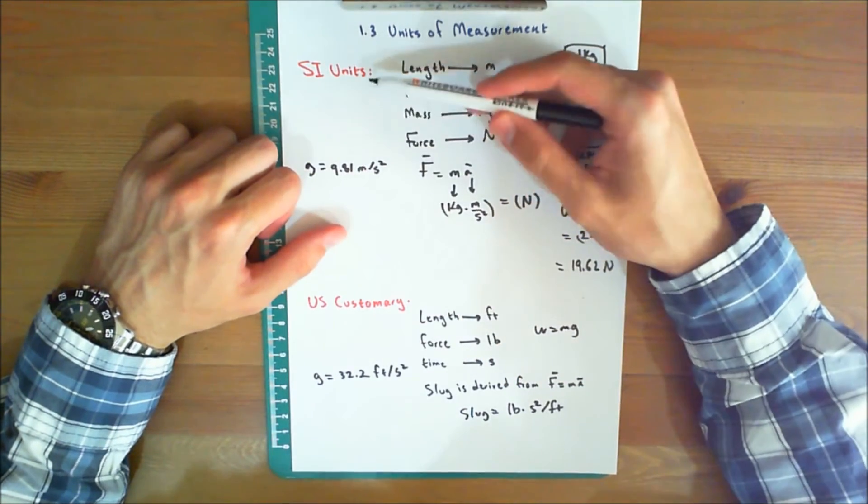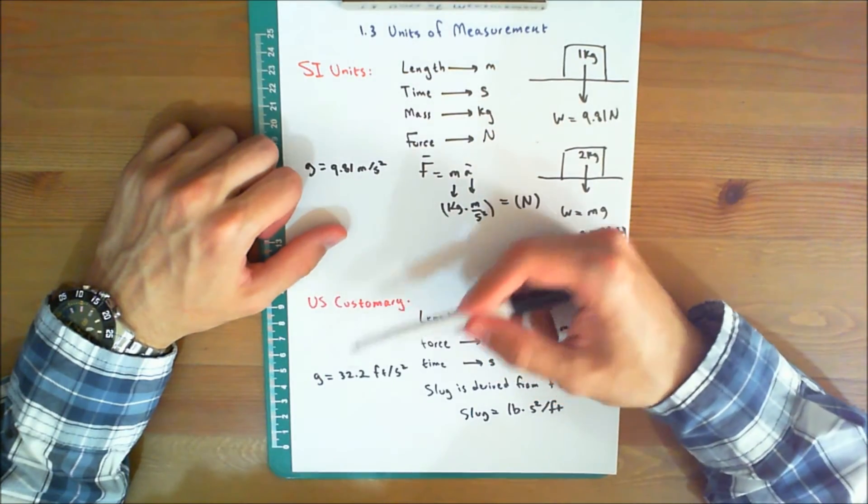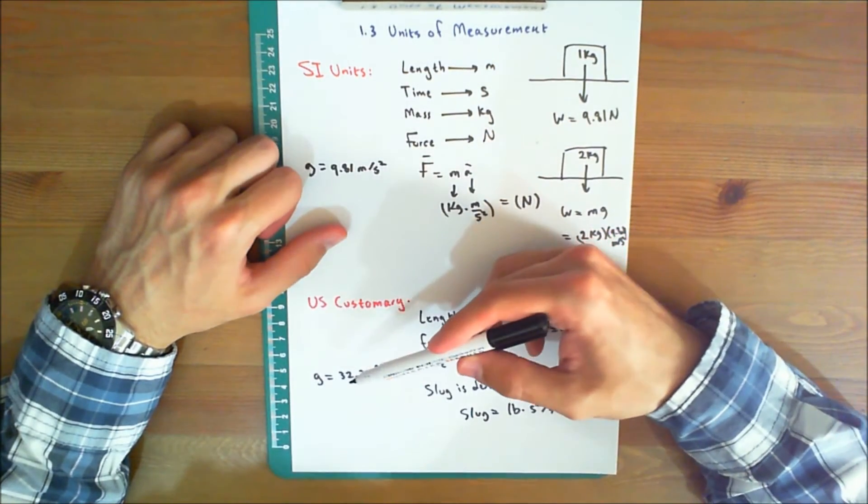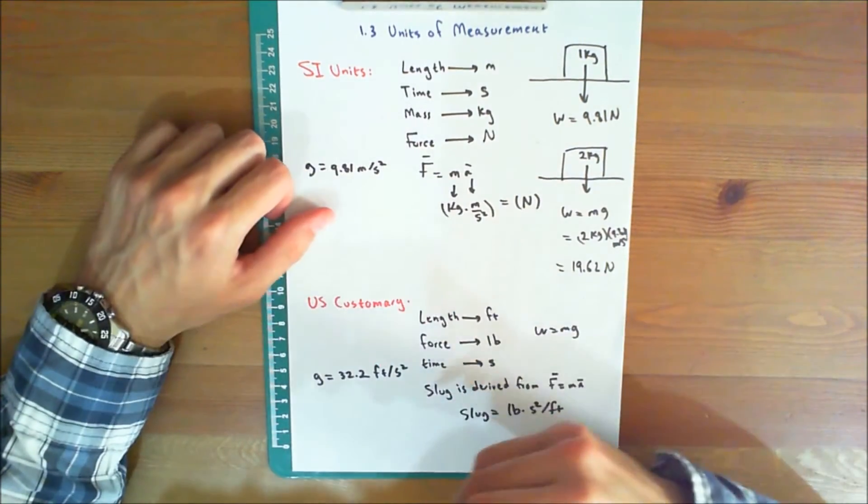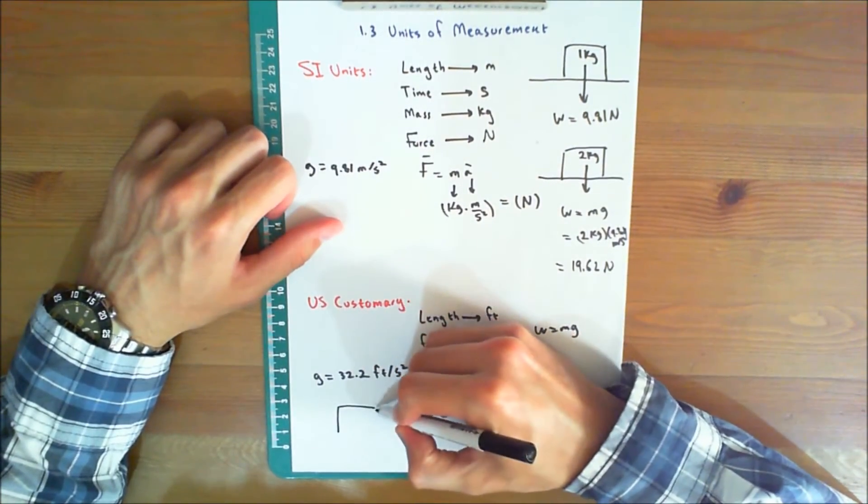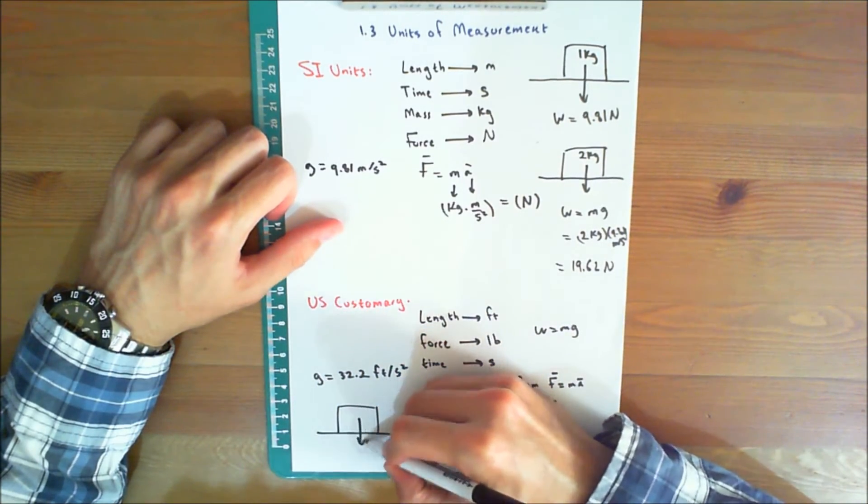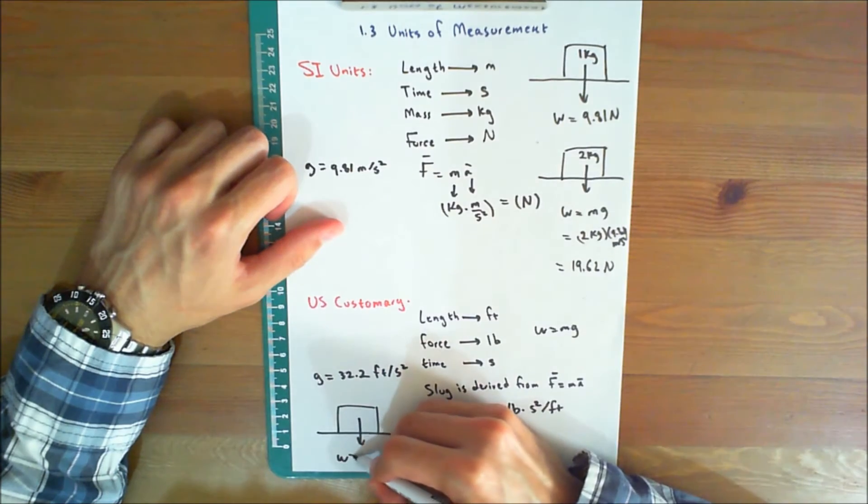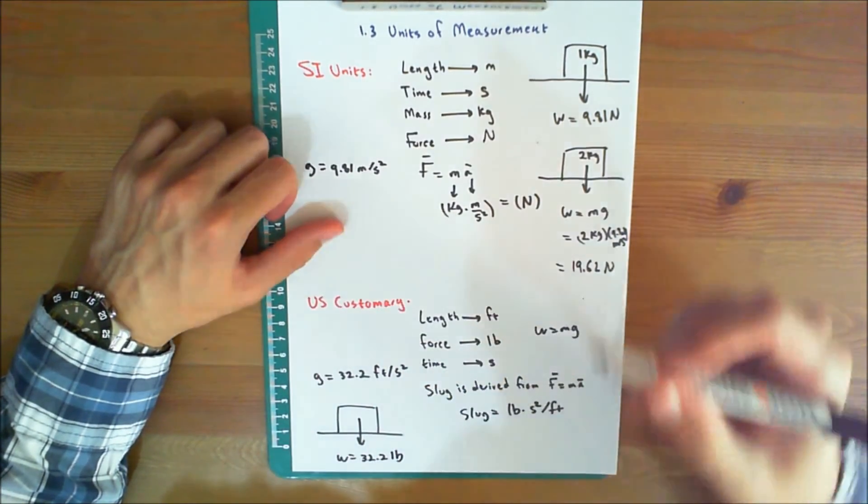Note that g for SI units is 9.81 meter per second squared, whereas g in U.S. Customary units is 32.2 feet per second squared. So, a body that has a mass of one slug would have a weight of 32.2 pounds.